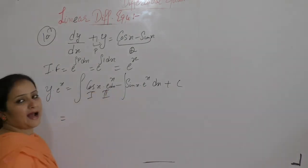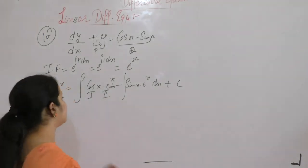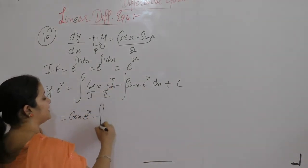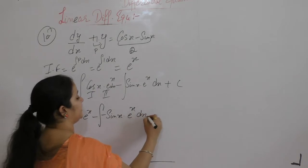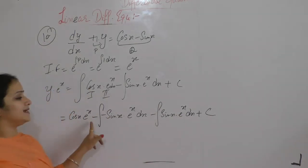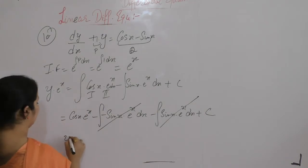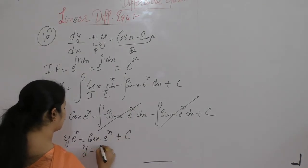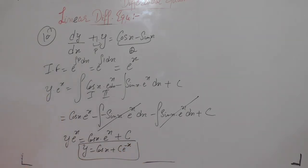Separate these integrals. Apply integration by parts on the first term because we have the derivative of cos here, so one round will get cancelled. First function as it is, integral of second, minus integral of derivative of cos which is minus sin(x), times the integral of e^x dx. The minus-minus becomes plus, and the sin(x) terms cancel. So we get y · e^x = cos(x) · e^x + c, or y = cos(x) + c · e^(-x).